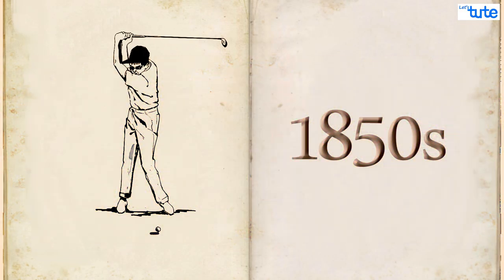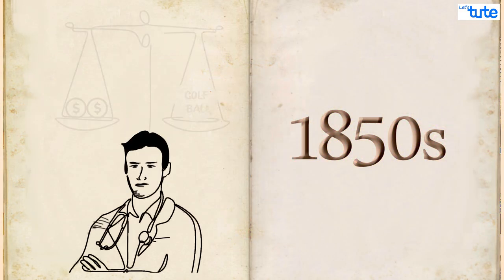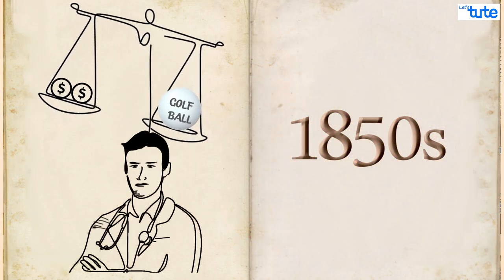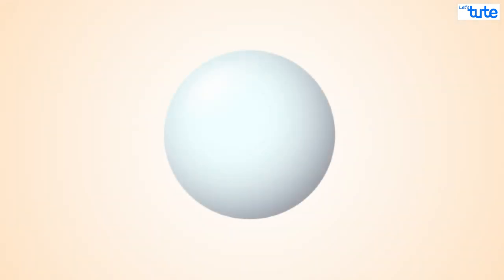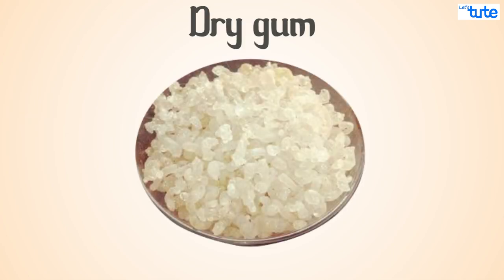Our story starts in the year 1850 when a medical student could not afford a golf ball. The balls at the time were smooth leather balls filled with wet feathers inside them. These balls were very expensive, and so the medical student made a new type of ball using dry gum.